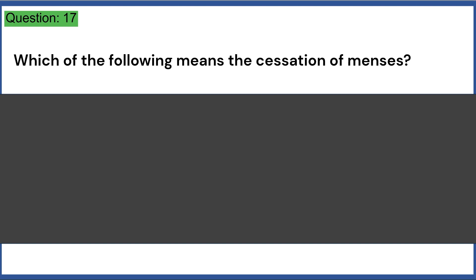Which of the following means the cessation of menses? a. Dystocia b. Menarche c. Menopause d. Metrorrhagia e. Orchiopexy. Answer, C.